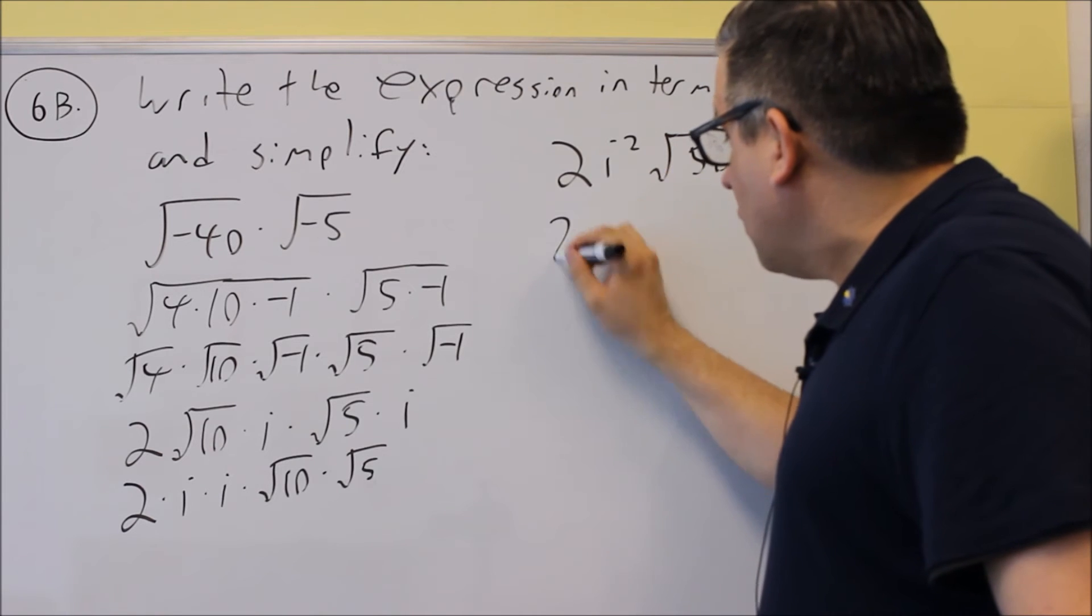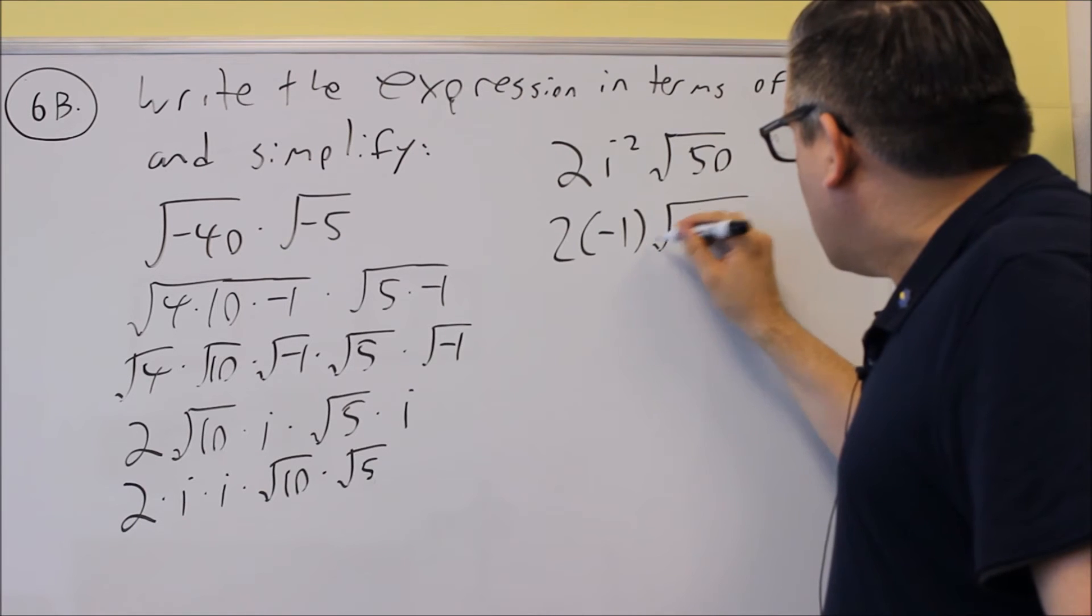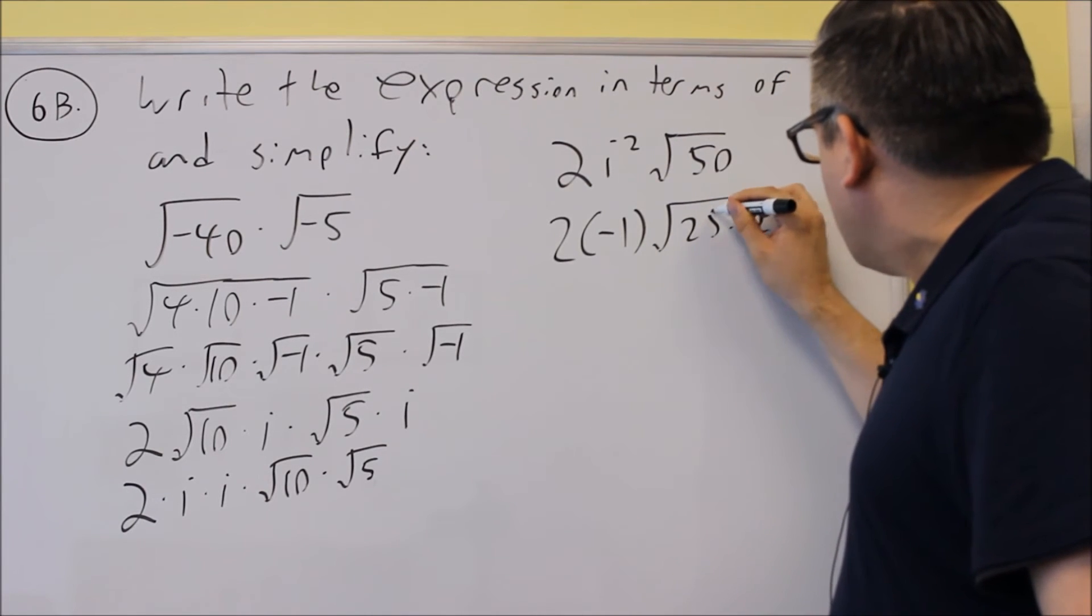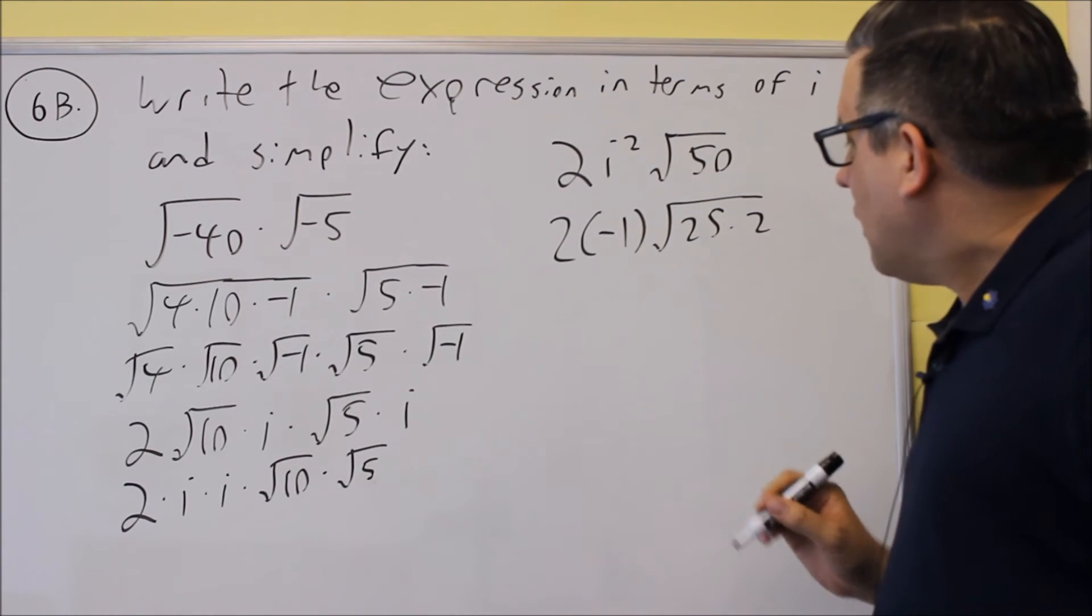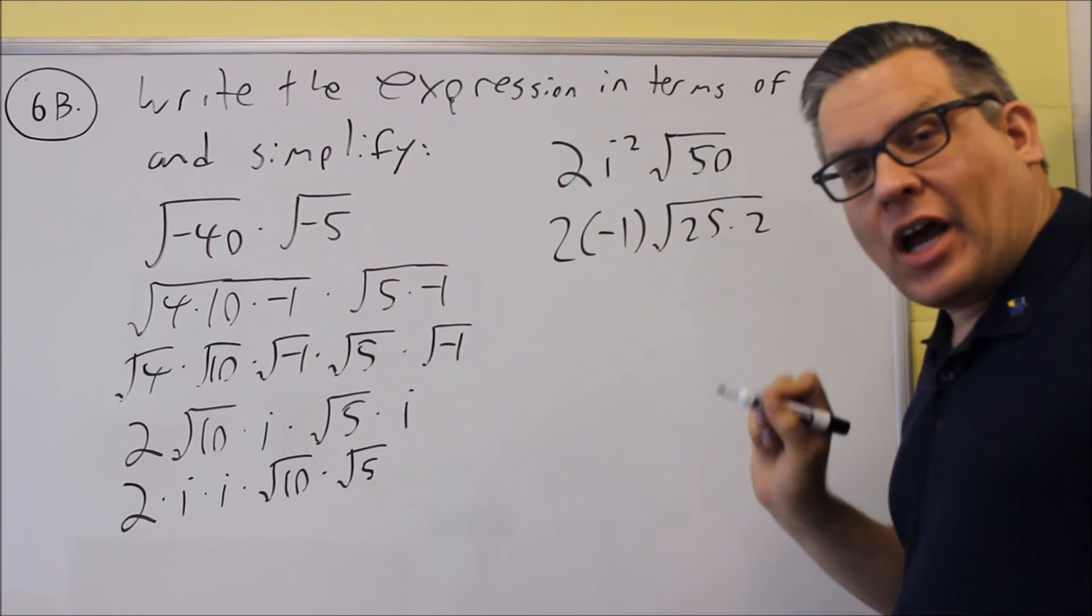And i squared, we can turn that into negative 1. So inside here, I'm going to have a square root of 25 times 2. The square root of 25 is 5, and it's going to multiply by what I have out here.